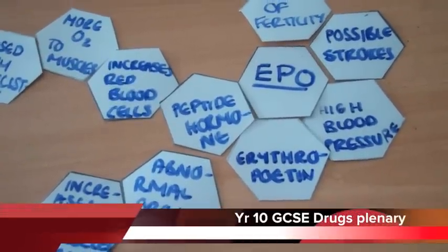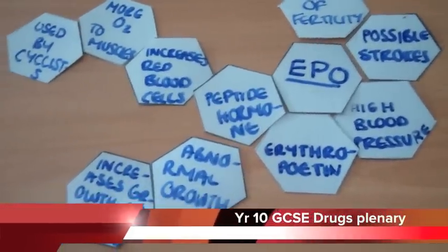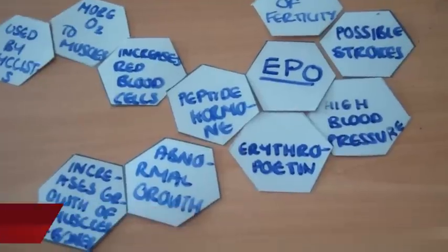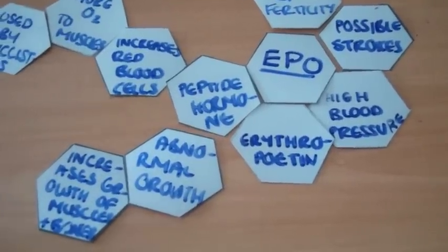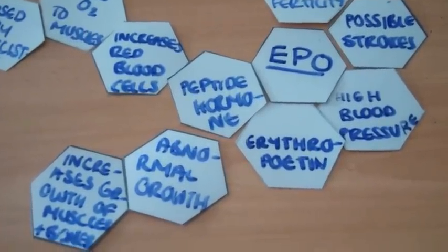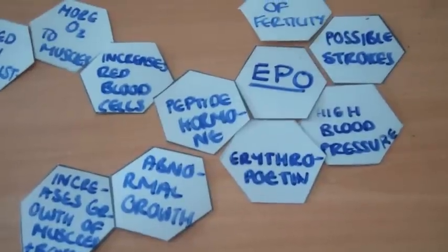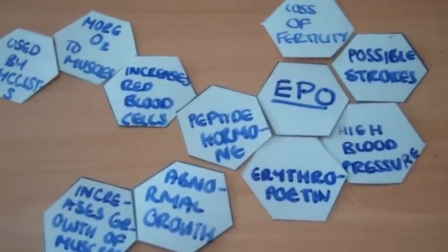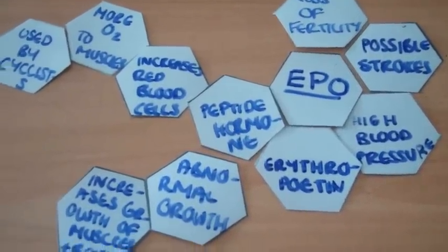Your drug you're working on is EPO. Can someone explain to me the links you've made here? Keely? Well, EPO is a peptide hormone, so it increases your red blood cells, giving more oxygen to your muscles. So people like cyclists use it.